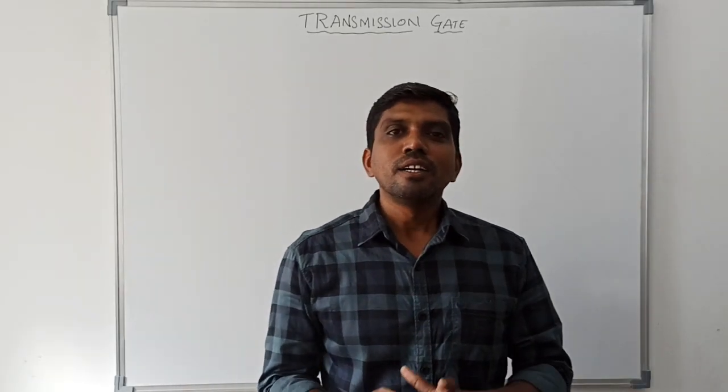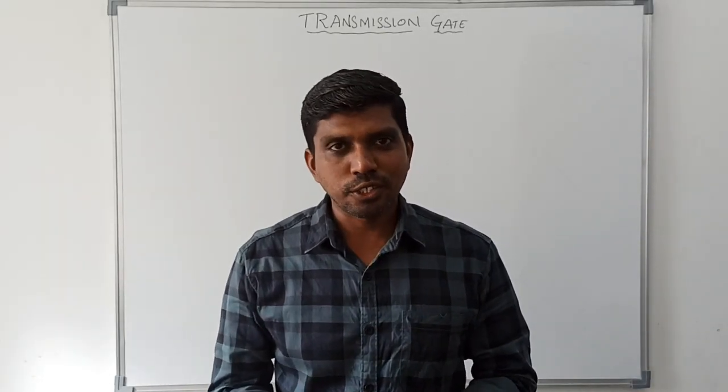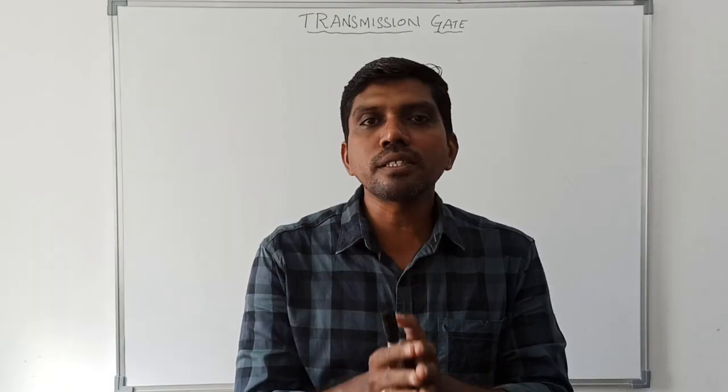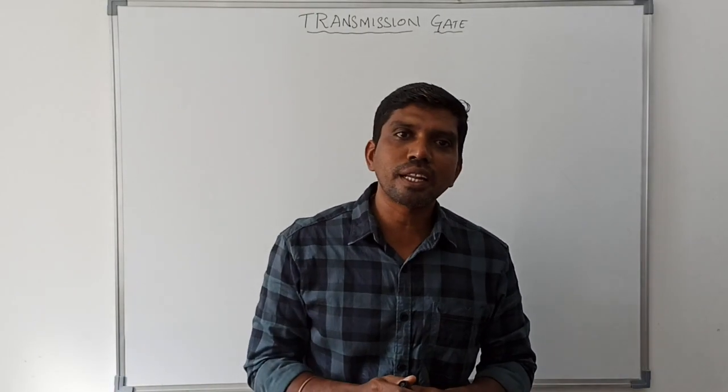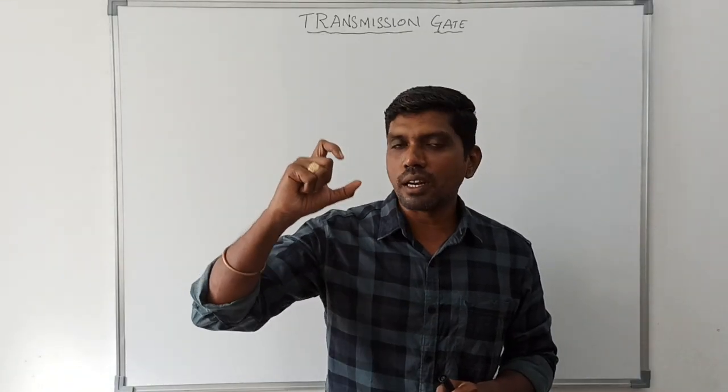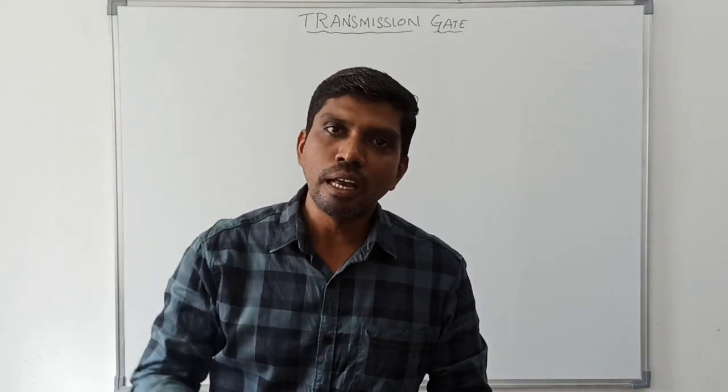Welcome back to our channel. Today I am going to teach about transmission gate. A transmission gate transfers input data from the input side to the output side when the control value equals 1. It has two inputs: one is called the primary input and the other is called the controlling input. The structure of a transmission gate uses a pMOS transistor and an nMOS transistor connected in parallel.